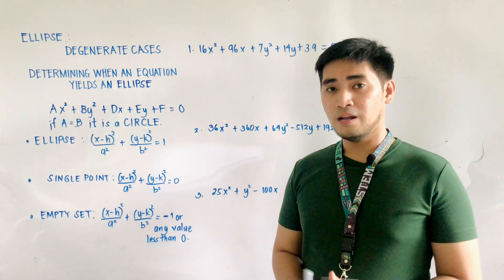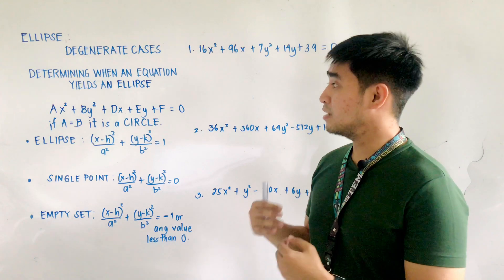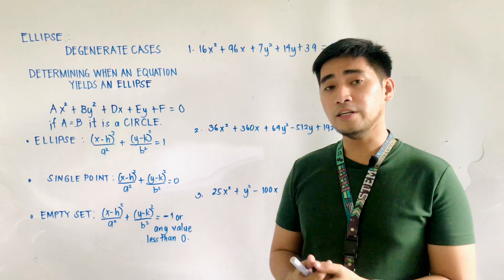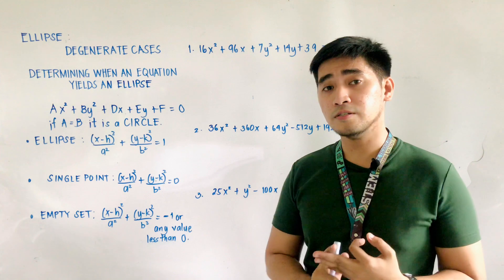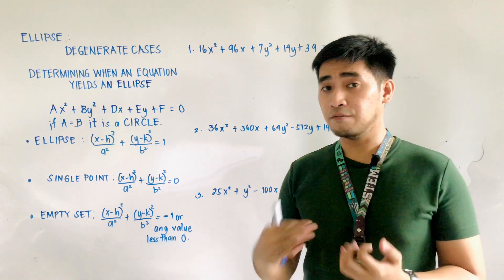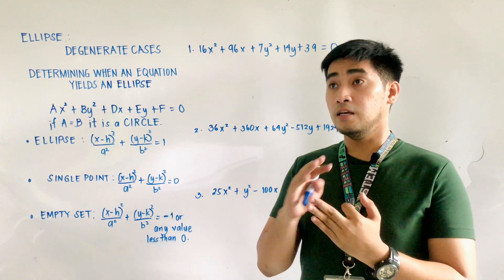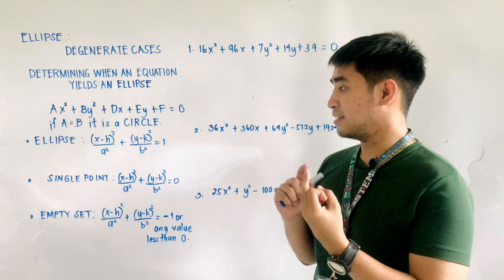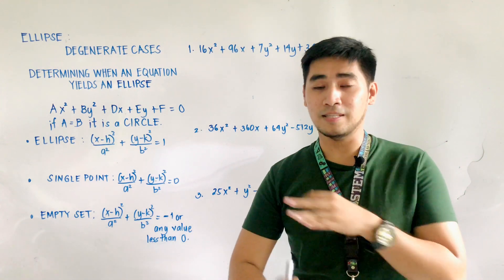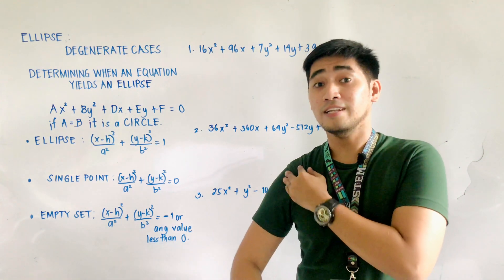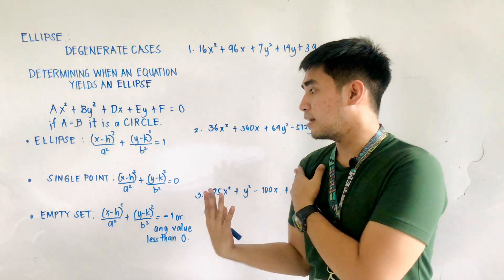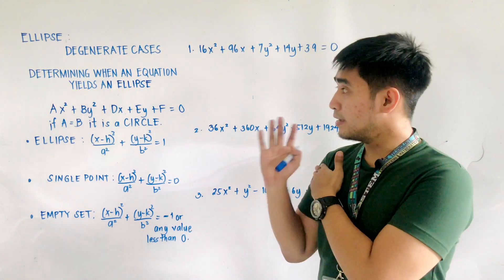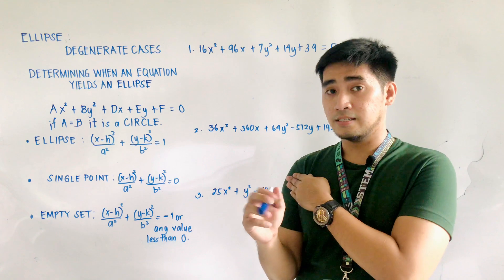Let us try to determine when an equation yields an ellipse. We have three options. If we are given an equation, we could say that it is an ellipse, it is a single point, or an empty set — just like a circle, which we could classify as a single point and an empty set for its degenerate cases.